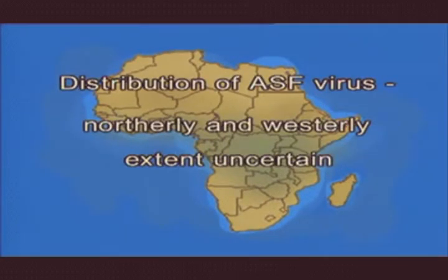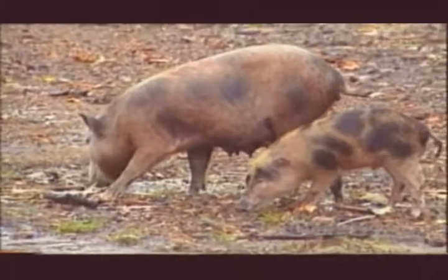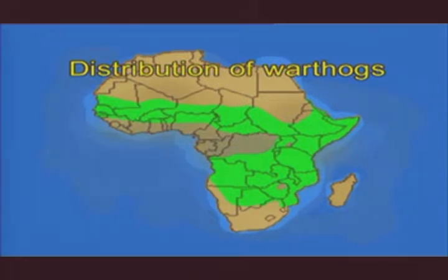Other than in southern and eastern Africa, the distribution of ASF virus in its free-living state is not accurately known. In particular, the northerly and westerly extent of its occurrence remains to be accurately established. The West African situation is especially confusing because ASF in domestic pigs has long been established there and warthogs occur in parts of a number of countries of the region. However, whether ticks capable of transmitting ASF virus are also present, and if so, their status vis-à-vis ASF virus infection, remains to be determined.